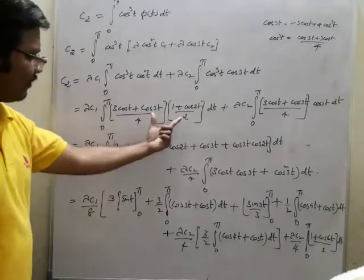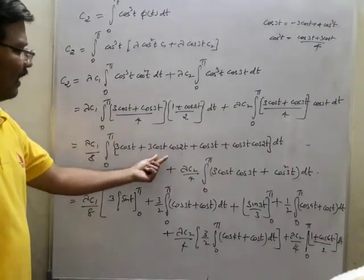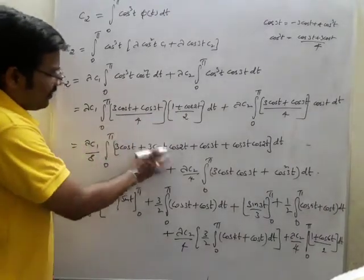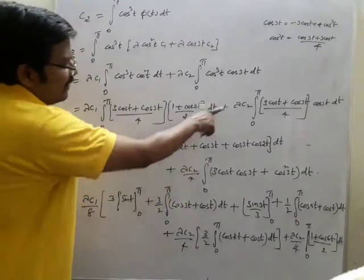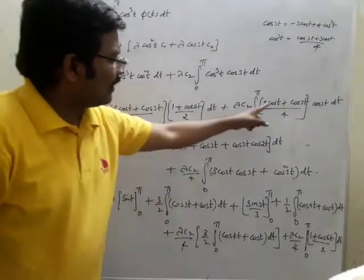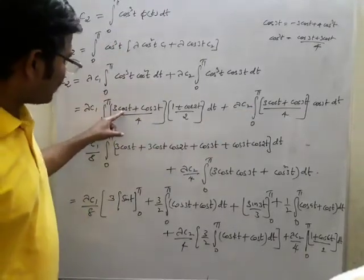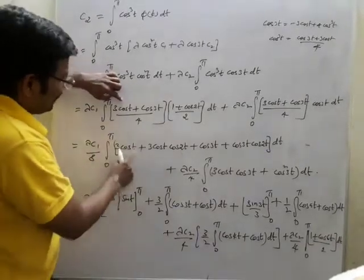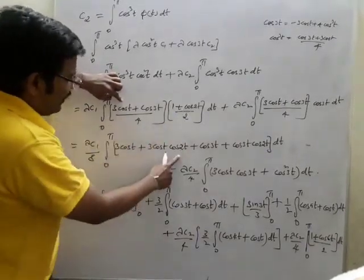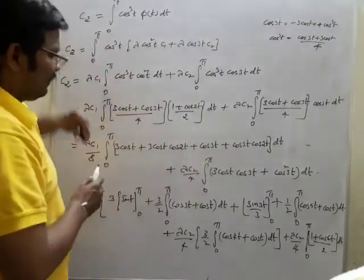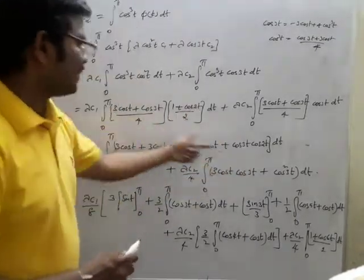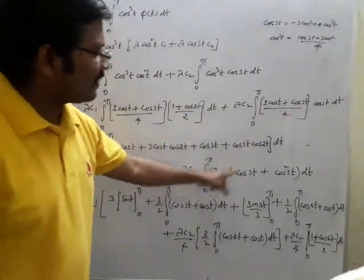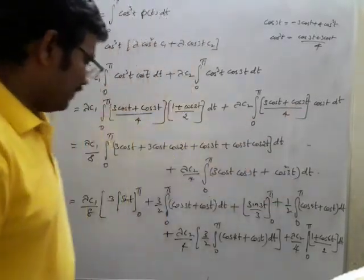This is λ·c2. Now, we have taken 1/4 outside and multiplied each and every term: 3cos(t), 3cos(t) into cos 2t, cos 2t and cos 3t as well. This is λ·c2 with cos 3t·cos t, cos 3t·cos t plus cos 3t, and cos 3t into cos 2t — that is the first term finished. The next term is cos 3t into cos t, and cos 3t into cos²t.